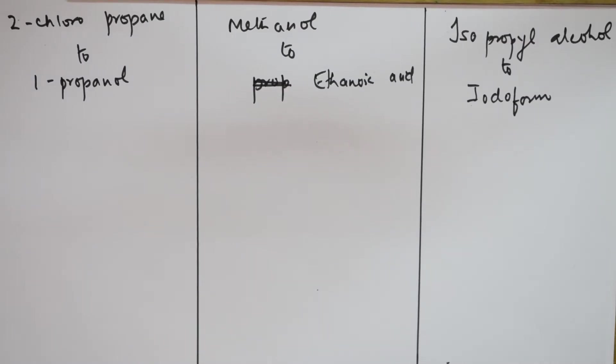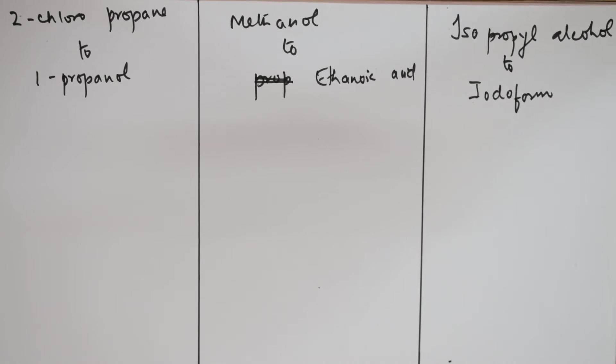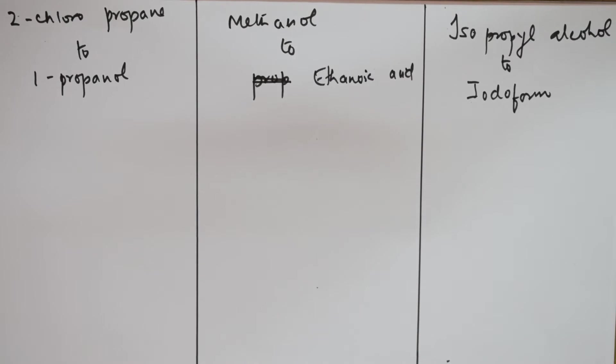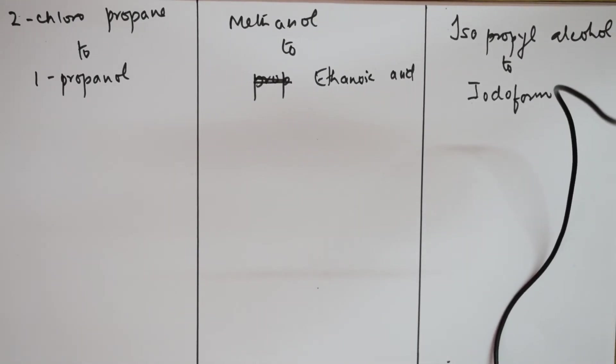Alright, let's come back and see the next type of aliphatic conversions. They've given me converting 2-chloropropane to 1-propanol. They've taken a relation between haloalkanes-haloarenes chapter and alcohols. Earlier they did between haloalkanes-haloarenes and acid group, here they picked up alcohols.